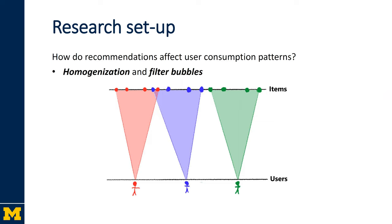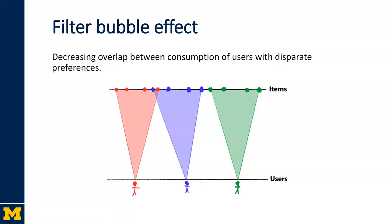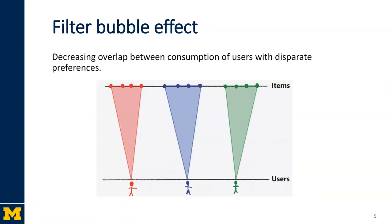In particular, we focus on two phenomena: homogenization and filter bubbles. Homogenization is when users consume similar items despite the differences in their preferences. On the other hand, filter bubble indicates a decreasing overlap between the consumption of users with disparate preferences.